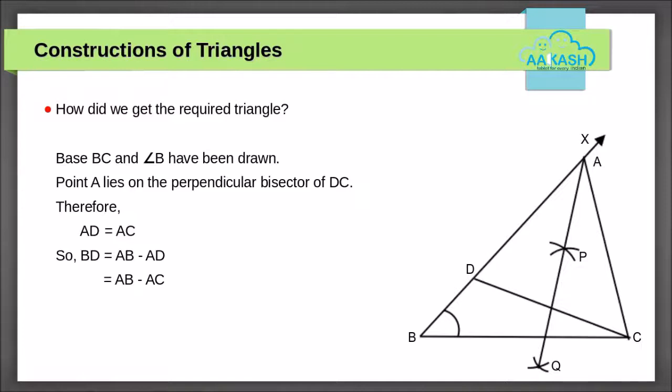Now let's see how we obtained the required triangle. Draw base BC and angle B. Point A lies on the perpendicular bisector of DC. Hence, AD is equal to AC. Therefore, BD is equal to AB minus AD, which equals AB minus AC.